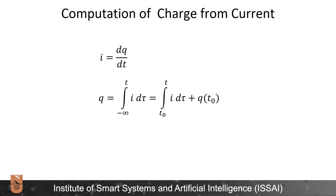How do we compute the charge from currents? As stated earlier, I is equal to dq over dt. We need to take the integral of both sides. Q is equal to the integral from minus infinity to t of I dt. If we start this integral from t0 instead of minus infinity, we need to also take into account the initial condition of charge at t equals t0, adding the term q(t0) to the equation.